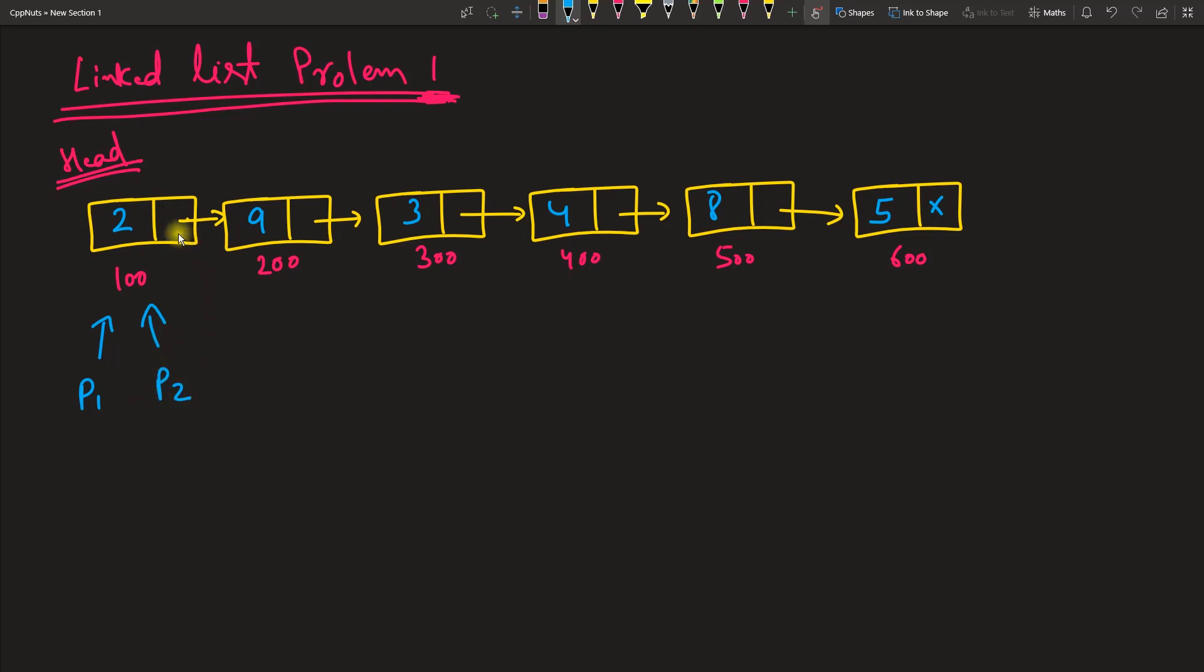You are already at the first point, so this is going to be the second point, and this is going to be the third point. Move your p2 here. Now p2 is pointing to this one and only p1 is pointing here. Now you simultaneously move p2 and p1 one by one.